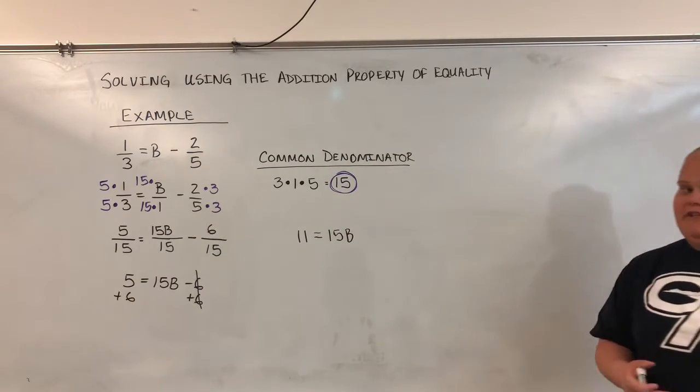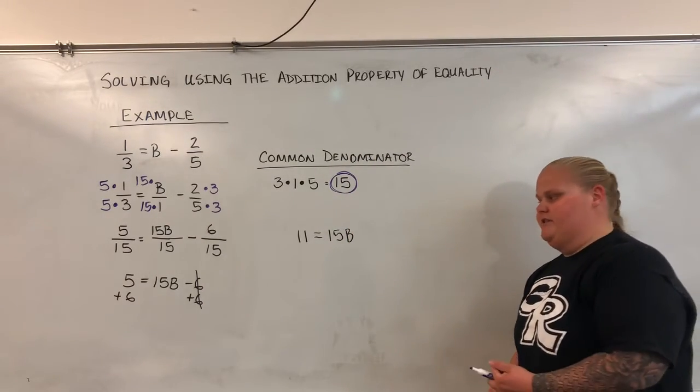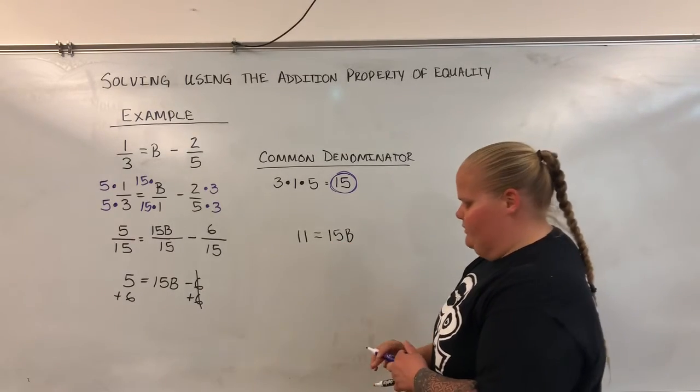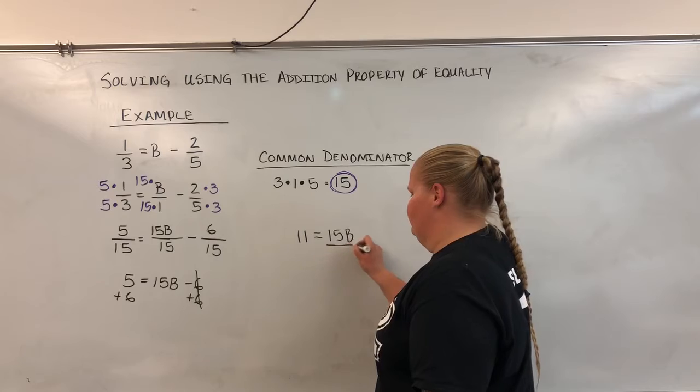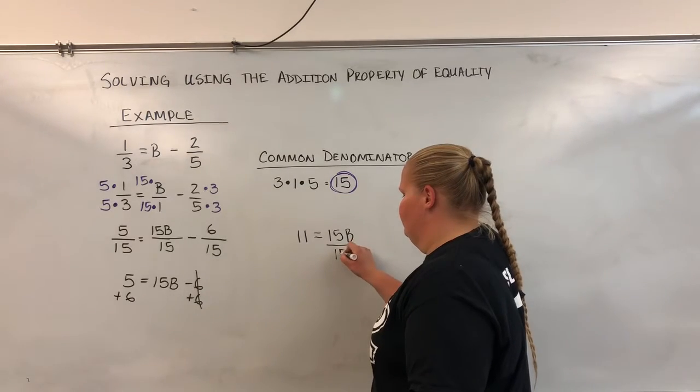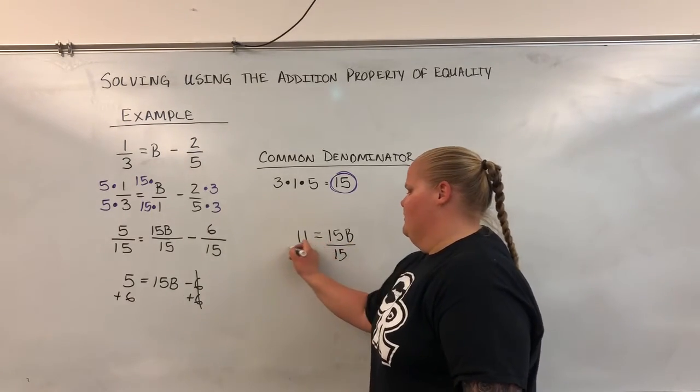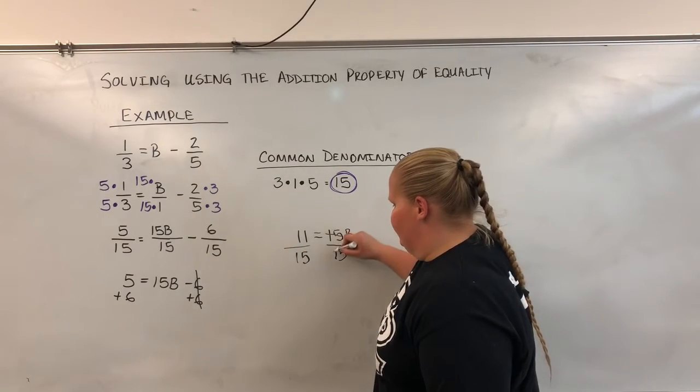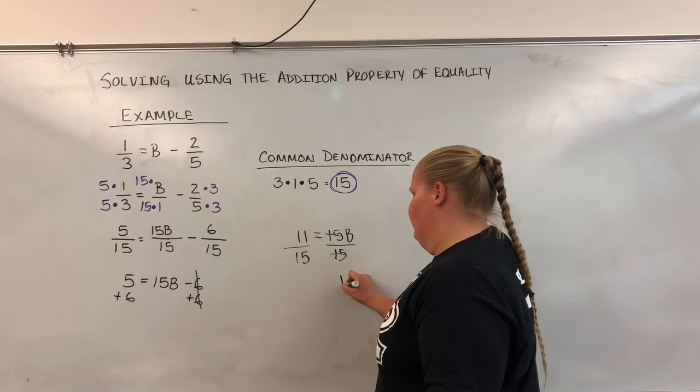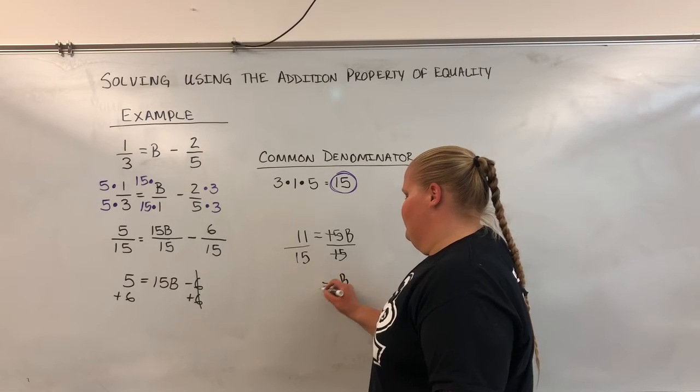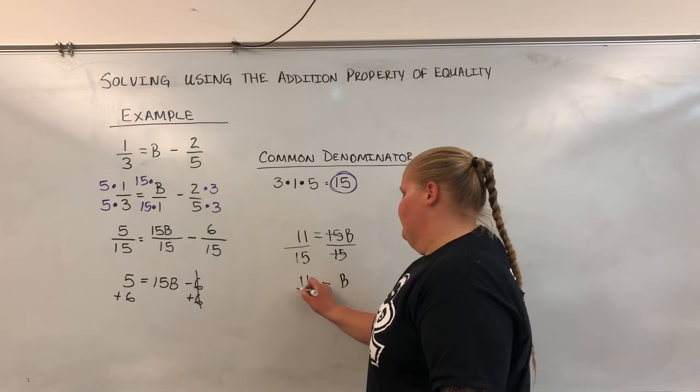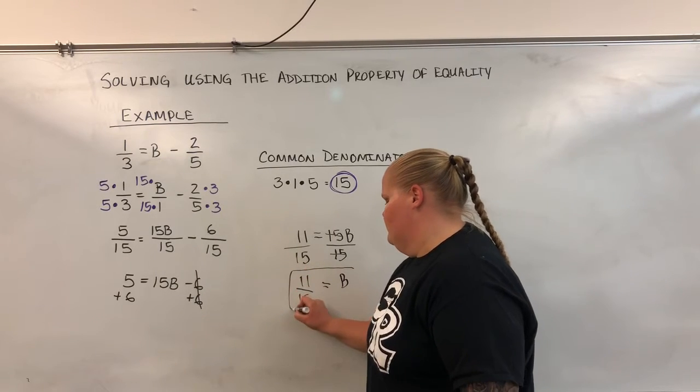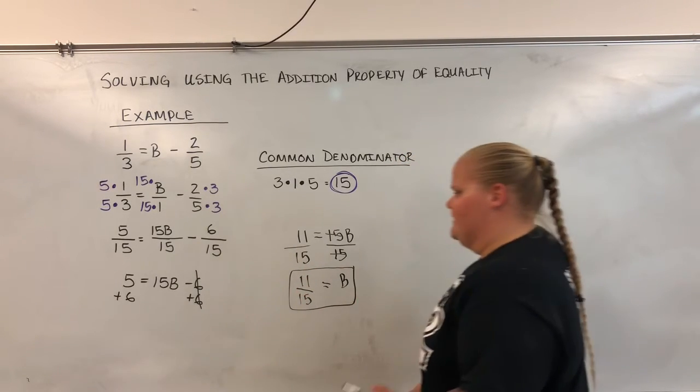Now to get B completely by itself, and we haven't really talked about this yet, but 15 times B, to get rid of multiplication, we're going to divide both sides by 15 because division is the opposite of multiplication. Here the 15s are going to cancel out, and I have B equals 11 over 15. And that is going to be my answer.